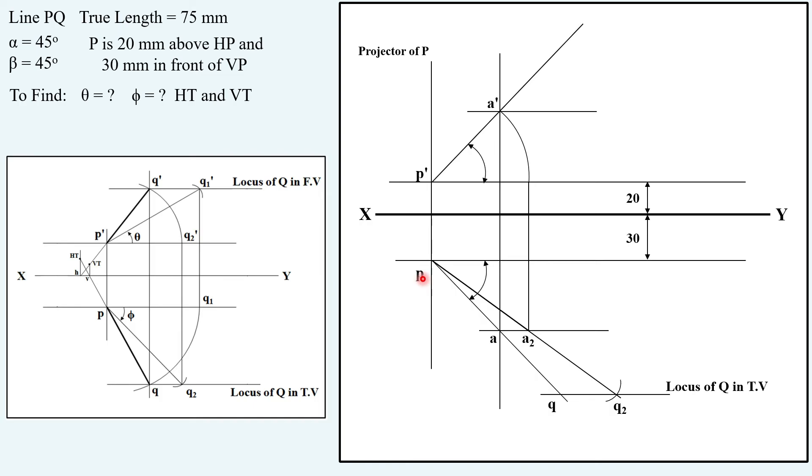Now once we have Q, we can draw a vertical projector which is going to intersect with this front view line here, creating another locus, locus of Q in front view. This point is Q'.